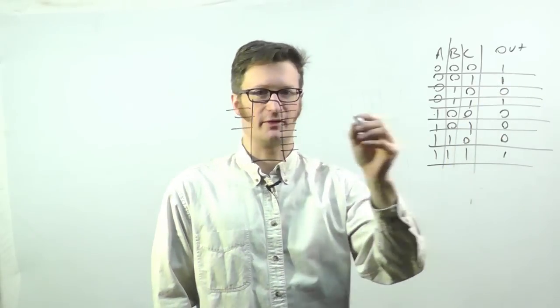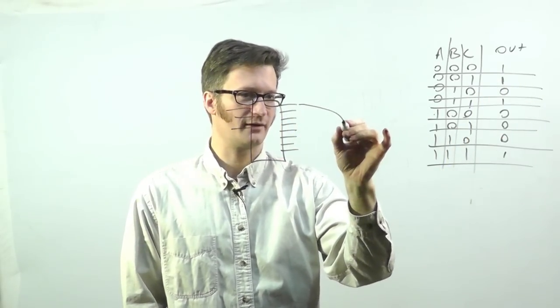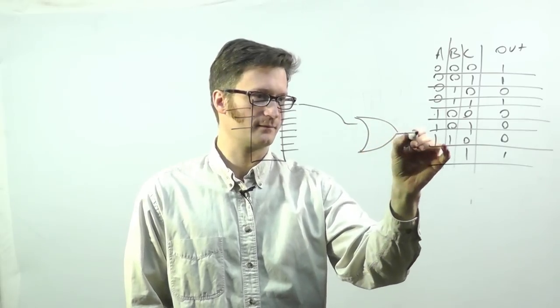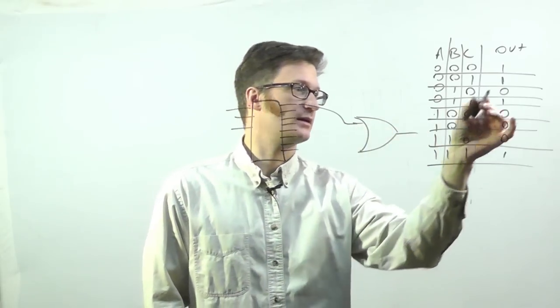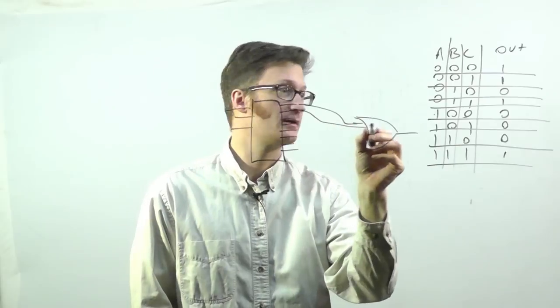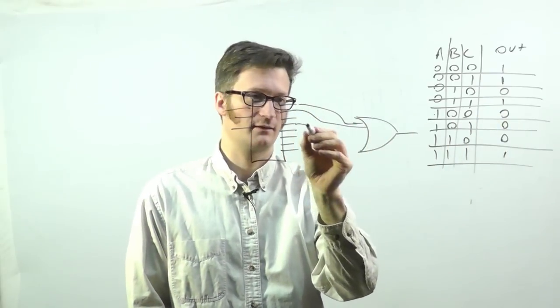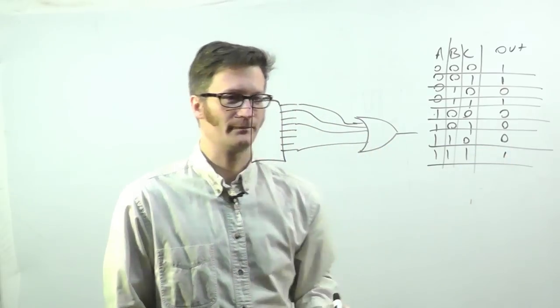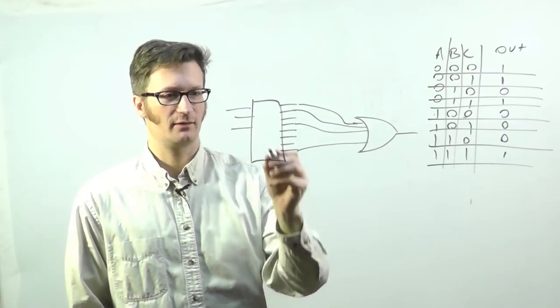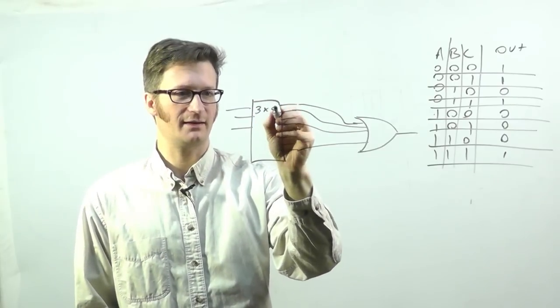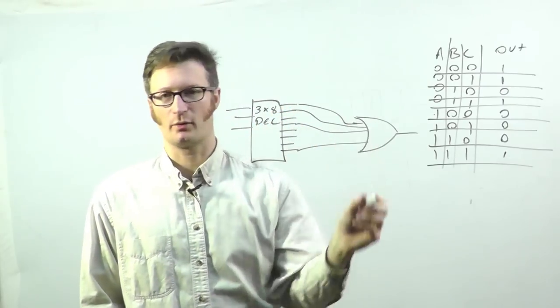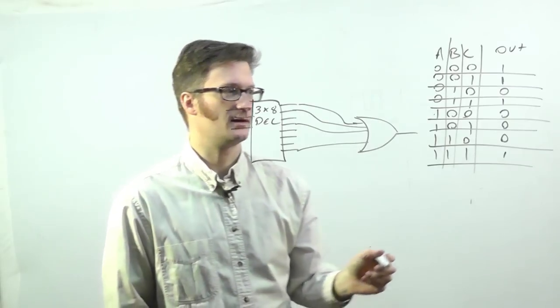And so, for zero, pretty much I'm going to have a major OR gate here. And one, and that one, and this one. And there we go. I've implemented, with a three by eight decoder and a four input OR gate, this.